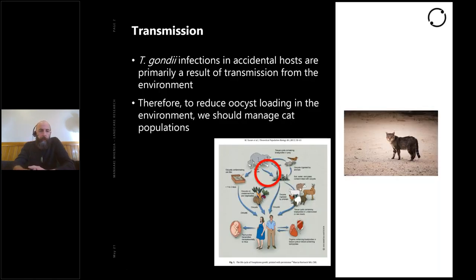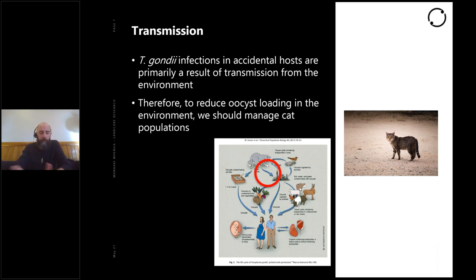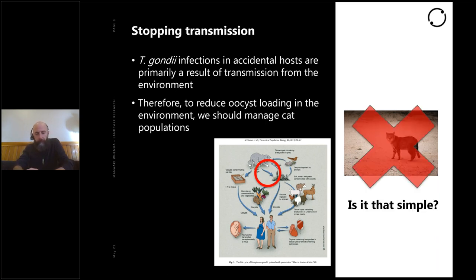Toxoplasma gondii infections in accidental hosts — humans, wildlife, agriculture, anything not part of the normal life cycle — primarily result from transmission from the environment. So almost all accidental hosts are getting infections from the environment. Therefore, to reduce the oocyst loading in the environment, we should manage cat populations. If cats were completely removed for the long term, there would be zero toxoplasmosis transmission. There are islands that cats have never been on, and those islands have no toxoplasmosis whatsoever. So can we just manage cats and reduce or completely eradicate toxoplasmosis?